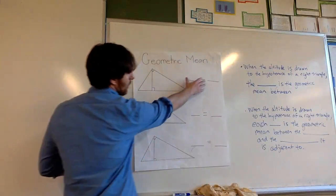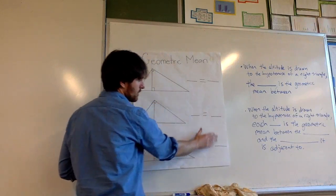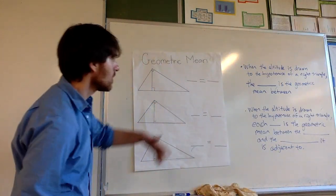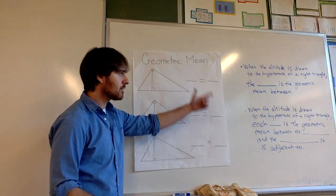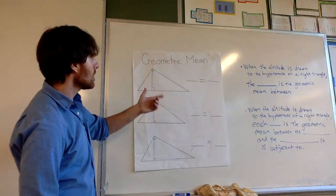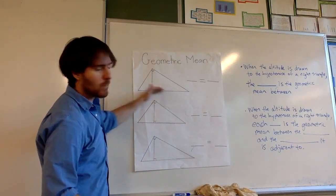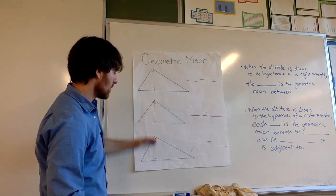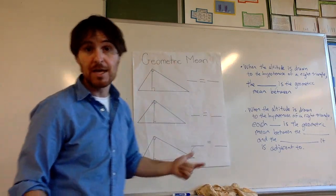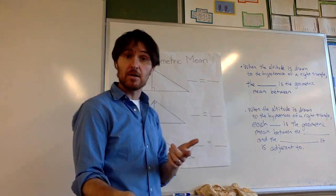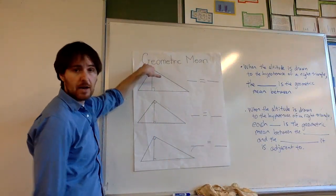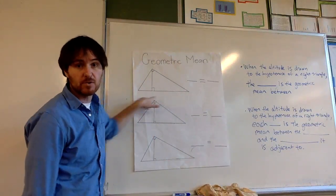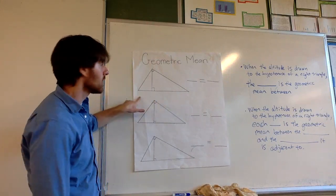So we've got geometric means — we've got three proportions we can set up with this diagram right here. The idea is: any right triangle, if we drop in the altitude to the hypotenuse — that means from the vertex at the right angle, going opposite the right angle to the hypotenuse — we'll call this the whole hypotenuse here.